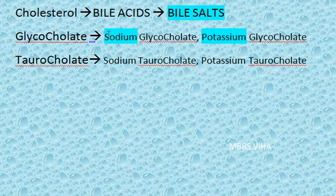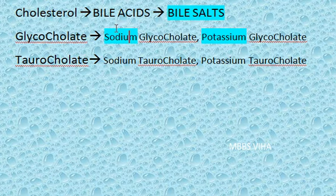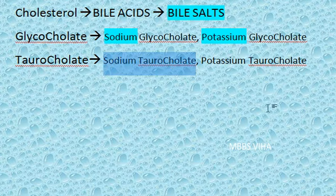When taurocholate is taken as the bile acid and made into a sodium or potassium salt, you get sodium taurocholate or potassium taurocholate. So bile salts are the ones which have the word sodium or potassium in their name.